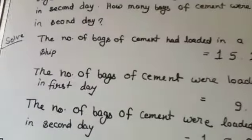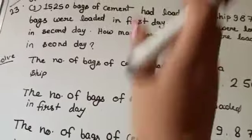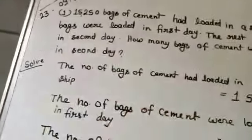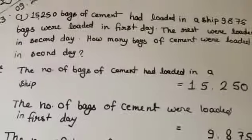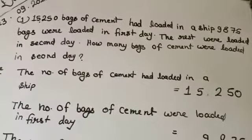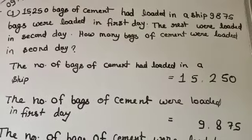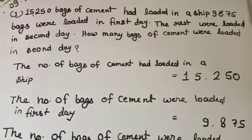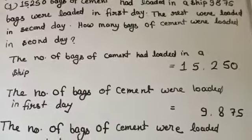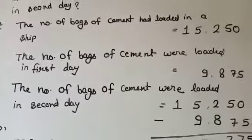Now you need to understand whether to do subtraction or addition. The total bags of cement is 15,250, and 9,875 is the first day amount. For example, if you have 15 rupees and spend 7 rupees on the first day, then on the second day you will have 8 rupees. So you subtract to find the second day amount.